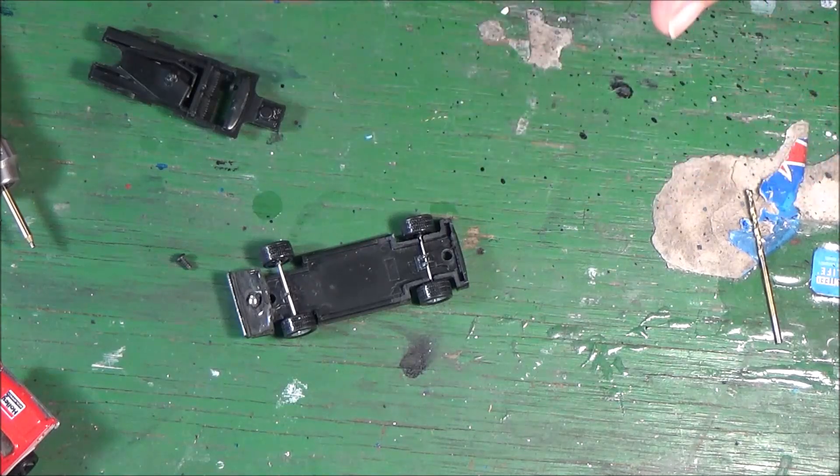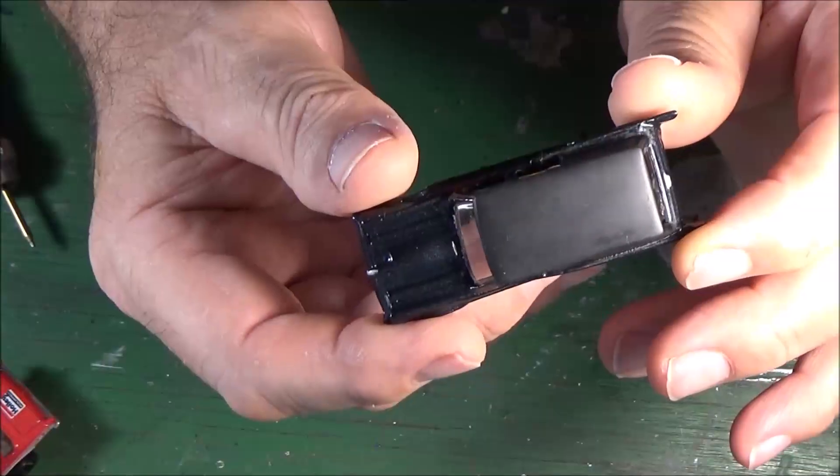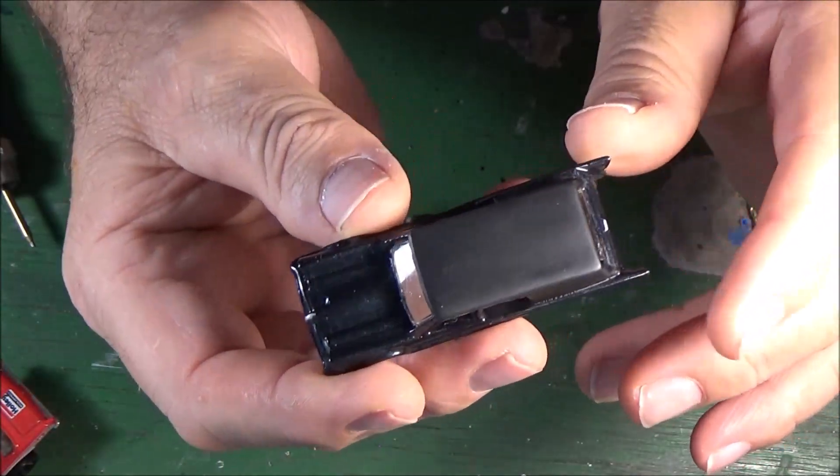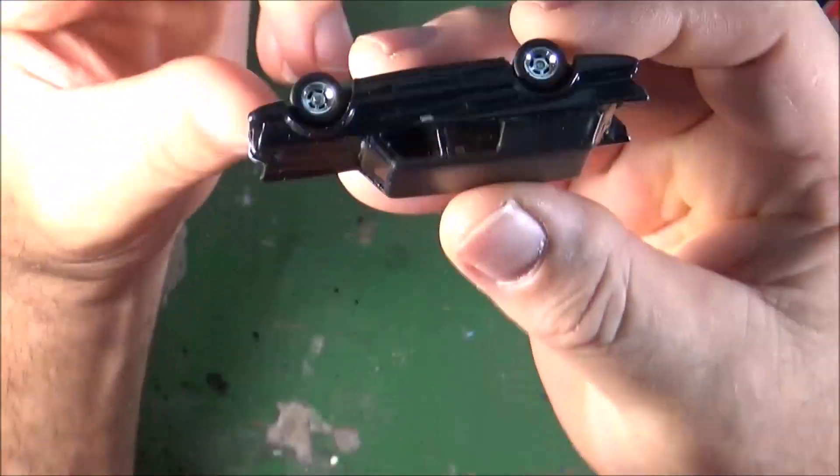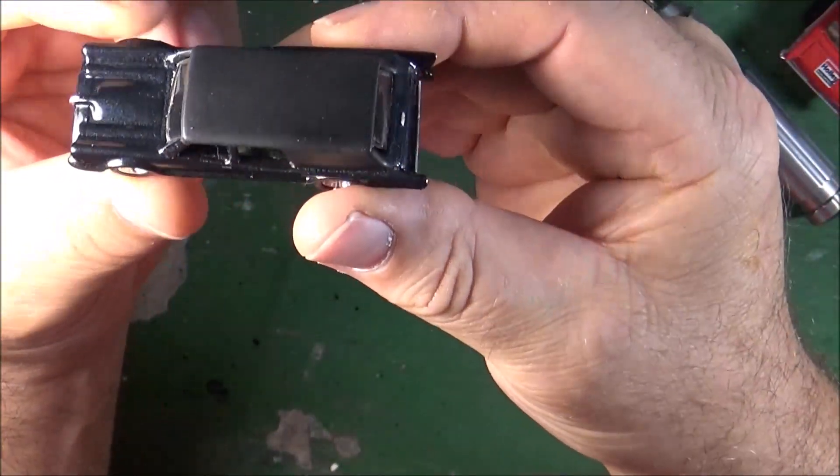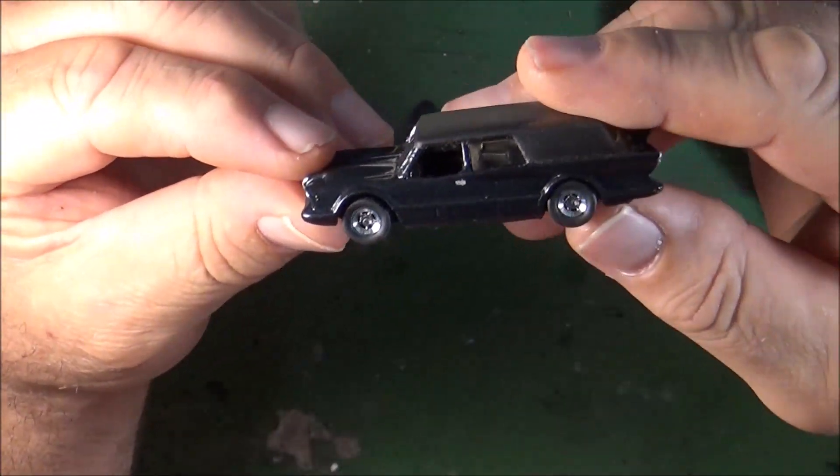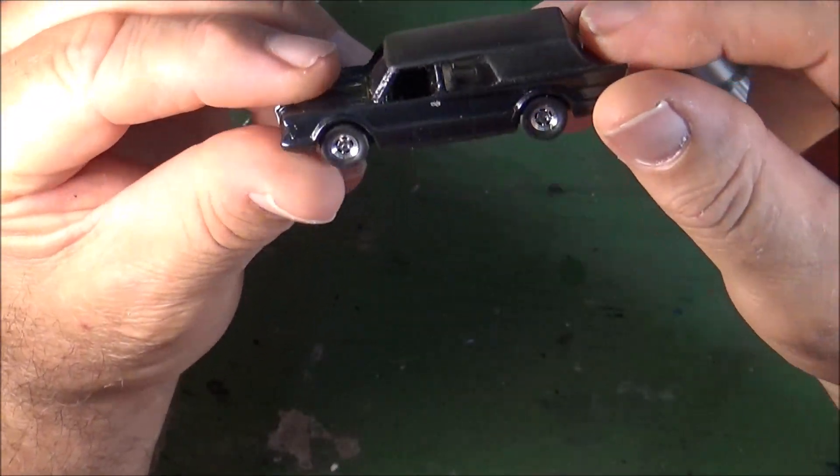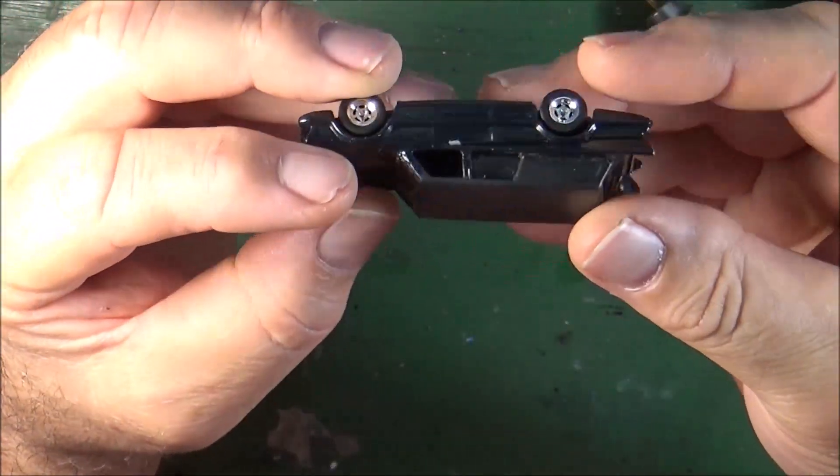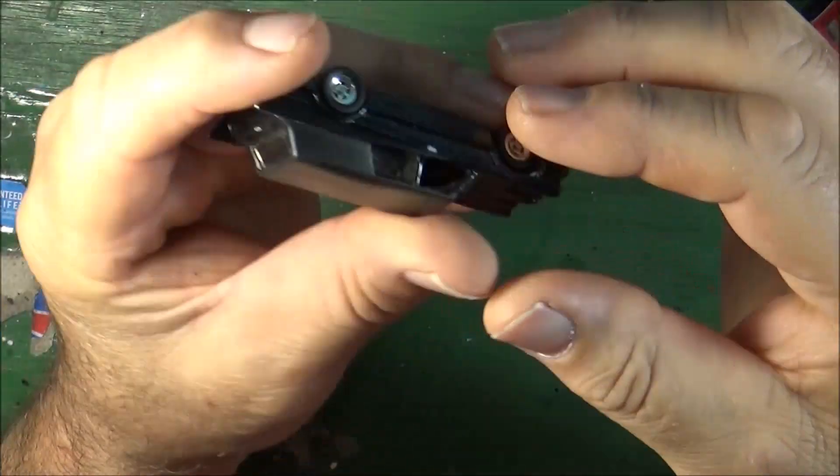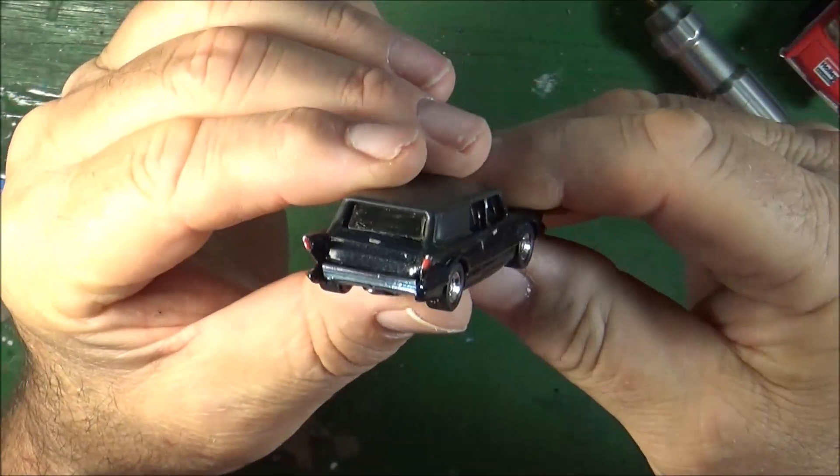Okay, we're back. I got the windshield, windows glued in. So we're going to go ahead and put this together, see what it looks like. That's what we got. Batmobile funeral car. A hearse. Try and keep it in the shot for you here. It's hard to see when you're looking overhead. I think it looks pretty good. I got some details on it.